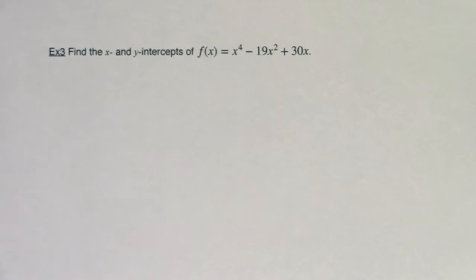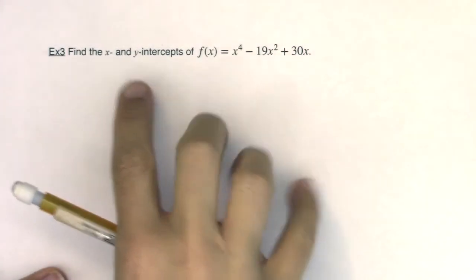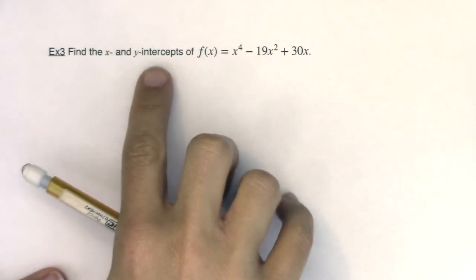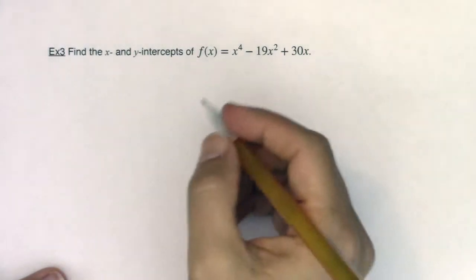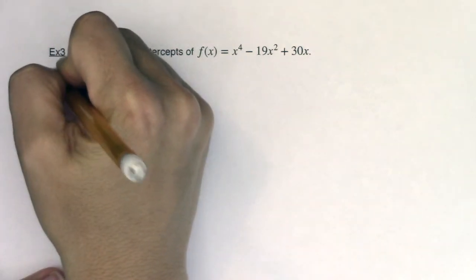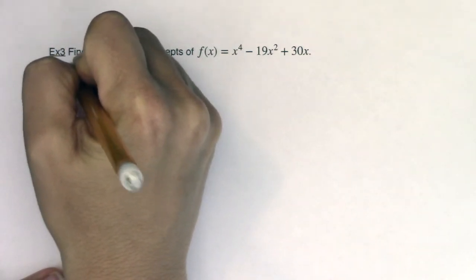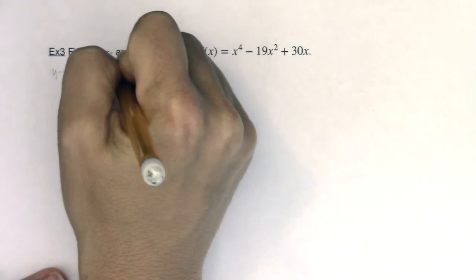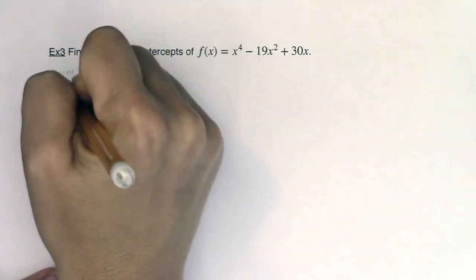Hey Math 31, we're back. Example 3, same directions, we want to find some x and y intercepts. So let's go ahead, I'm going to start with the y-intercept because it's typically the easier one. So anytime I want to find a y-intercept, I will let x equal 0. Let's see what we get back out.